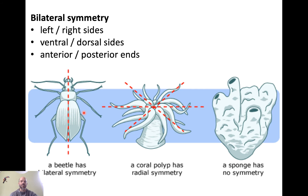Animals that have bilateral symmetry have three axes: a left-right axis, a ventral-dorsal axis, and an anterior-posterior axis. It's helpful to compare that to animals that do not have bilateral symmetry. A coral has radial symmetry — it does not have a left and right or a ventral and dorsal. And a sponge has no symmetry at all; it's a big blob of cells.